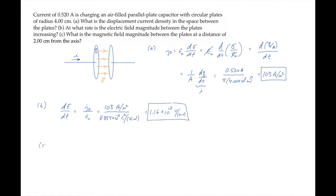Part C asks us for the magnitude of the magnetic field between the plates a distance of 2 centimeters from the axis. I'll come up to the figure and indicate that distance in red and call it little r. We'll find this magnetic field magnitude using Ampere's law: the line integral of B around a contour equals μ₀ times the current I enclosed by that contour. Due to the symmetry here, the contour we want is a circle centered on the axis of radius r — I'll draw it in green.